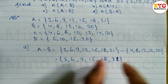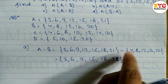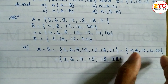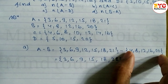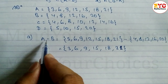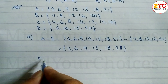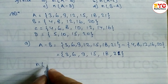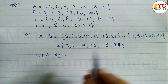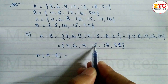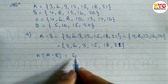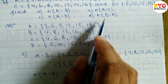The elements remaining in set B we do not write, because we are subtracting — elements remaining in the second set are not included. So the value of A minus B is {3, 6, 9, 15, 18, 21}. The cardinality of A minus B is the count of elements: 1, 2, 3, 4, 5, 6. So the cardinality of A minus B is equal to 6.